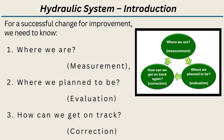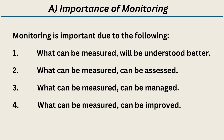For successful change and improvement, we need to know: 1. Where we are — Measurement. 2. Where we plan to be — Evaluation. 3. How can we get on track — Correction. Monitoring is important due to the following: what can be measured will be understood better, can be assessed, can be managed, and can be improved.